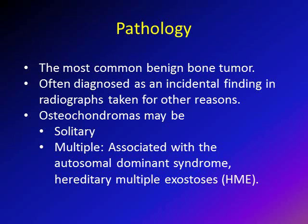Osteochondroma is the most common benign bone tumor. They represent about 35% of benign bone tumors, so they are very common. They are often diagnosed as an incidental finding on radiographs taken for other reasons.